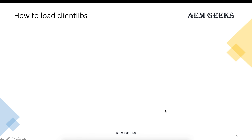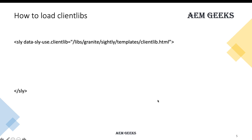Now let's see how you can load client libraries in your site. To include a client library, there's a specific template inside libs that you use. This template is responsible for loading your client library — you provide the name of your client library as input and specify what kind of file you want to load: either CSS, JS, or all.